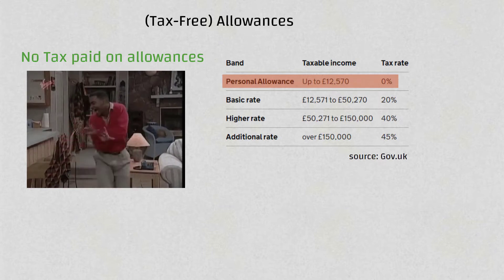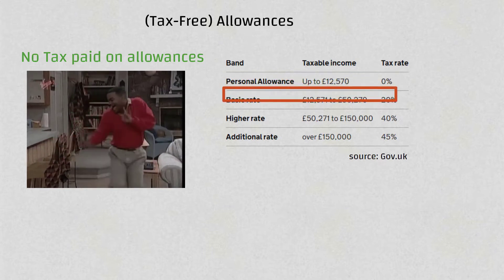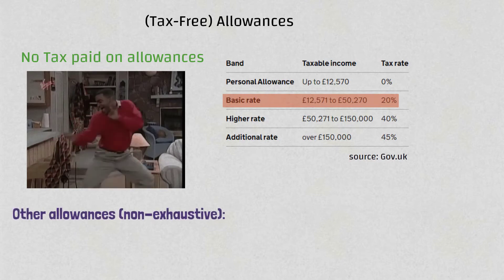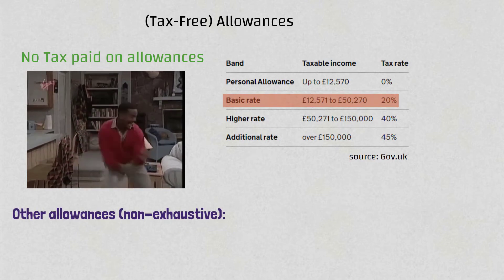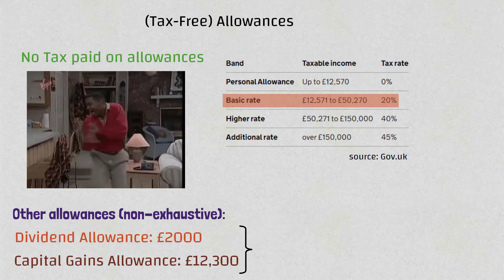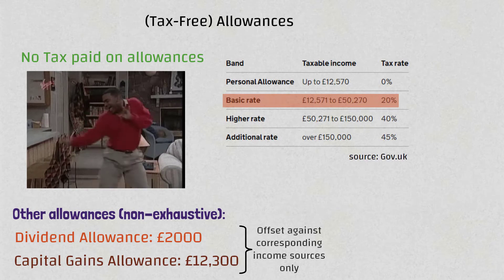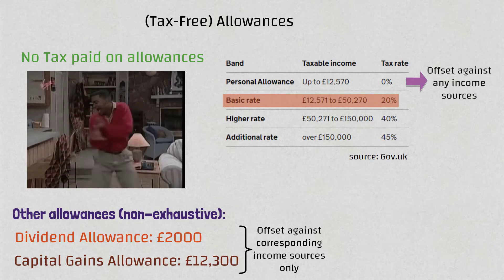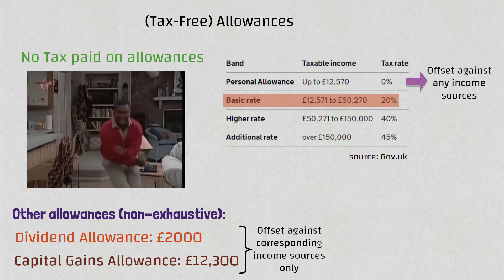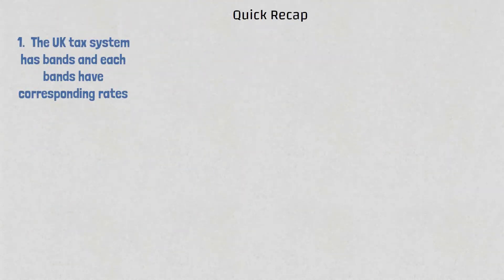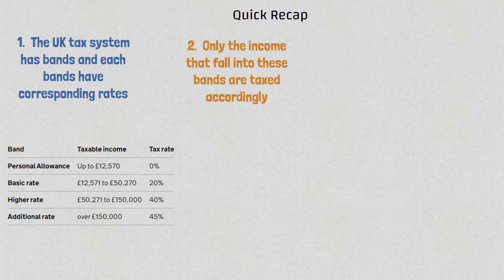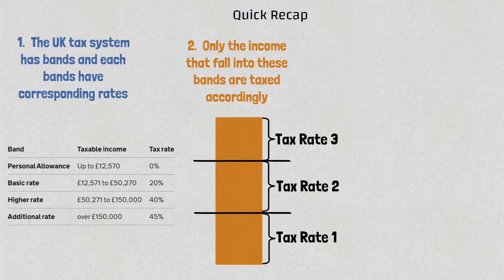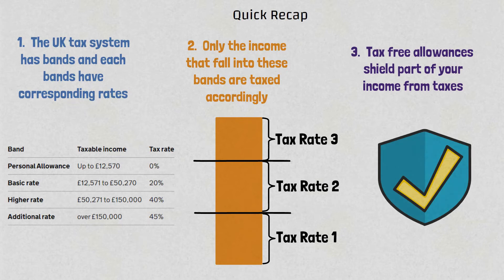This is why you sometimes see the tax band expressed differently — you pay a 20% tax rate on any amount between £12,570 and £50,270. Now there are other types of allowances specifically for different sources of income. For example, you have a dividend allowance of £2,000, meaning the first £2,000 of your dividend income is tax free. Your personal allowance is special in that it can be used against other sources of income, not just your salary.